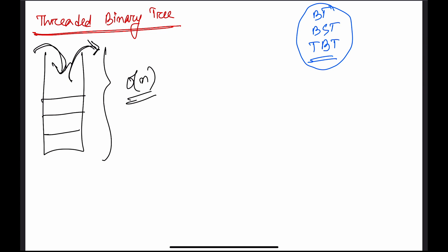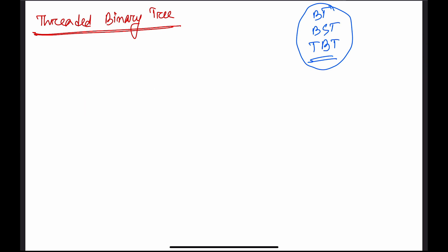Traversal can be implemented more efficiently if we can avoid the use of a stack, which would reduce space complexity. We can do this by maintaining threads in the binary tree. First, let me discuss a key property: a binary tree with n nodes has 2n pointers, out of which n+1 are always null.